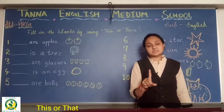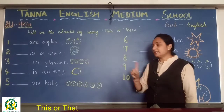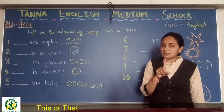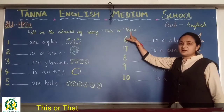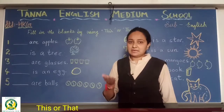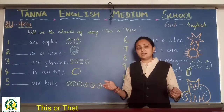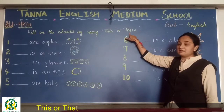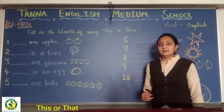When there is only one thing, we use T-H-I-S — 'this is'. And 'these' — T-H-E-S-E — is used when there is more than one, one or many. These are the rules we learned. For example: 'These are students.'